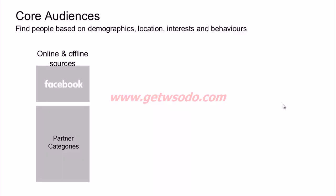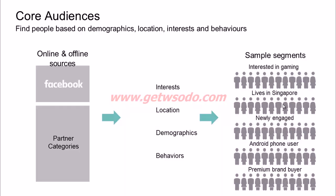Facebook has a lot of consumer data collected based on behavior on Facebook as well as through offline data partners. Using this data, Facebook has built targeting segments for advertisers. With core audience targeting you can reach people based on interests, location, demographics, and behaviors — for example, people interested in gaming, people in Singapore who are newly engaged, use Android phones, and shop for premium brands.